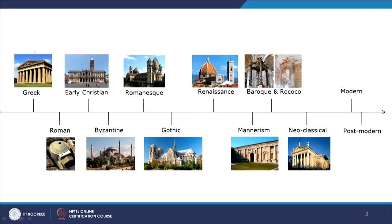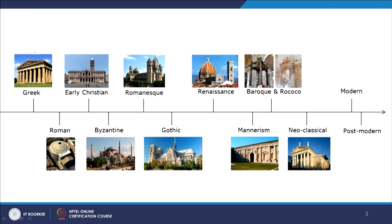The Greek and Roman architecture came first. Then Early Christian, Byzantine, Romanesque, Gothic, Renaissance, then mannerism, then Baroque and Rococo, then neoclassical — after that the industrial revolution started, and this is the contemporary part of architecture.